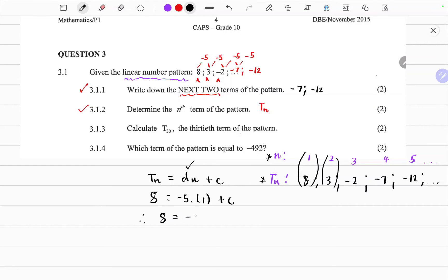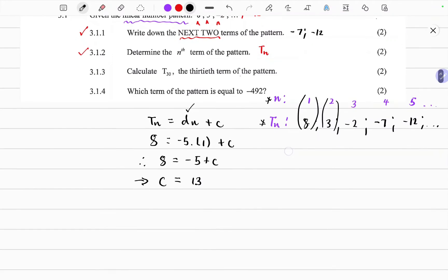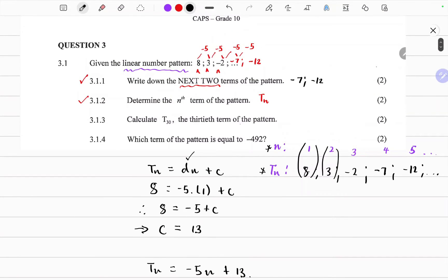Therefore, 8 should be equals to negative 5 plus C. So it implies that C should be equals to 13. So now we can find the nth term. It means Tn is equals to negative 5n plus 13.